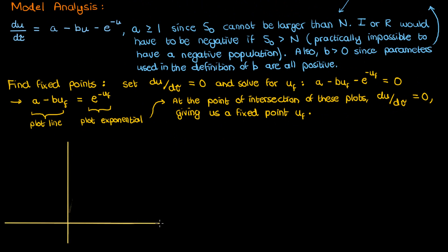Anyway, let's now plot these two functions with u on the horizontal axis. I'll start with the line a minus bu, which obviously has a vertical intercept at a that we know is greater than or equal to 1 and a horizontal intercept at a over b.